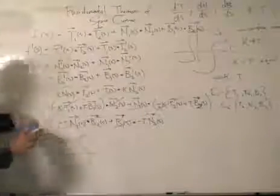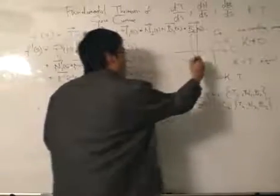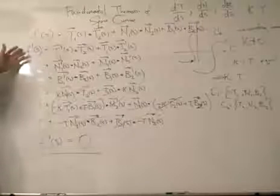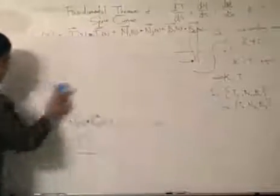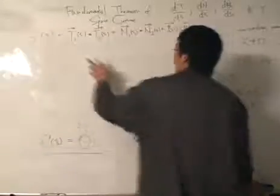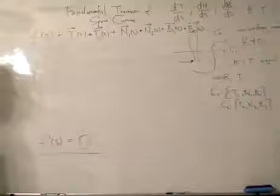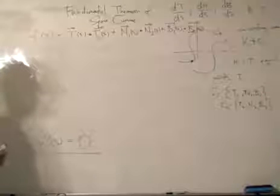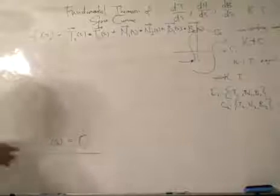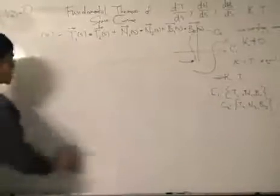If we start at a certain arc length, which corresponds to a point on the curve, the value of this function doesn't change because the rate of change is zero, as we've just proven. So this function f(s) — which is the sum of the dot products — does not change as we move along the curve. We still need a few more steps to interpret what that means, so take some time to think about it before Part 2. The first derivative of this function equals zero, meaning the function stays constant as s changes.